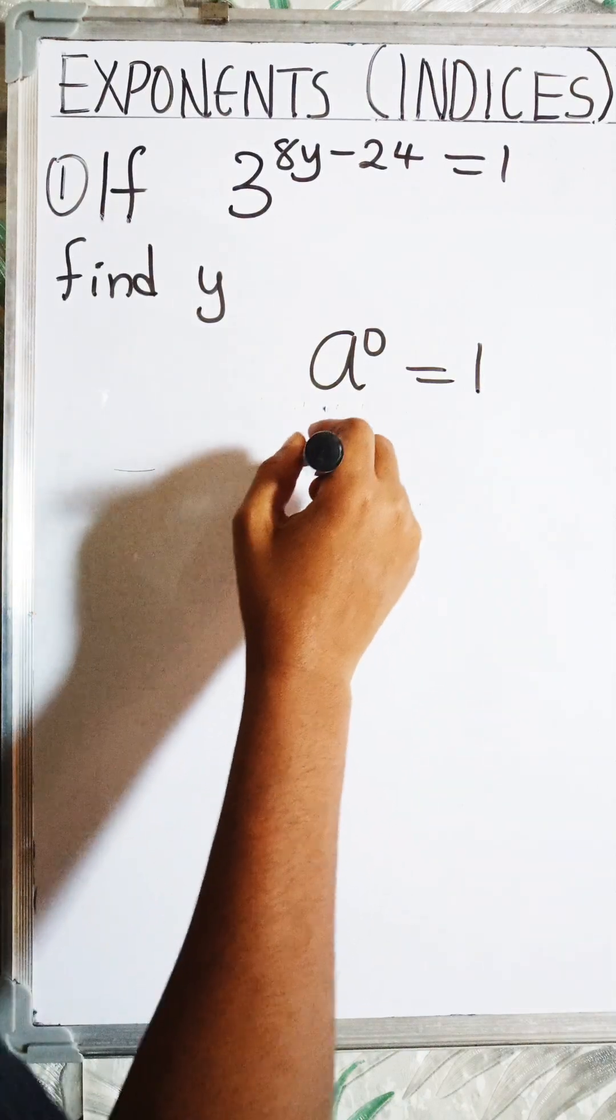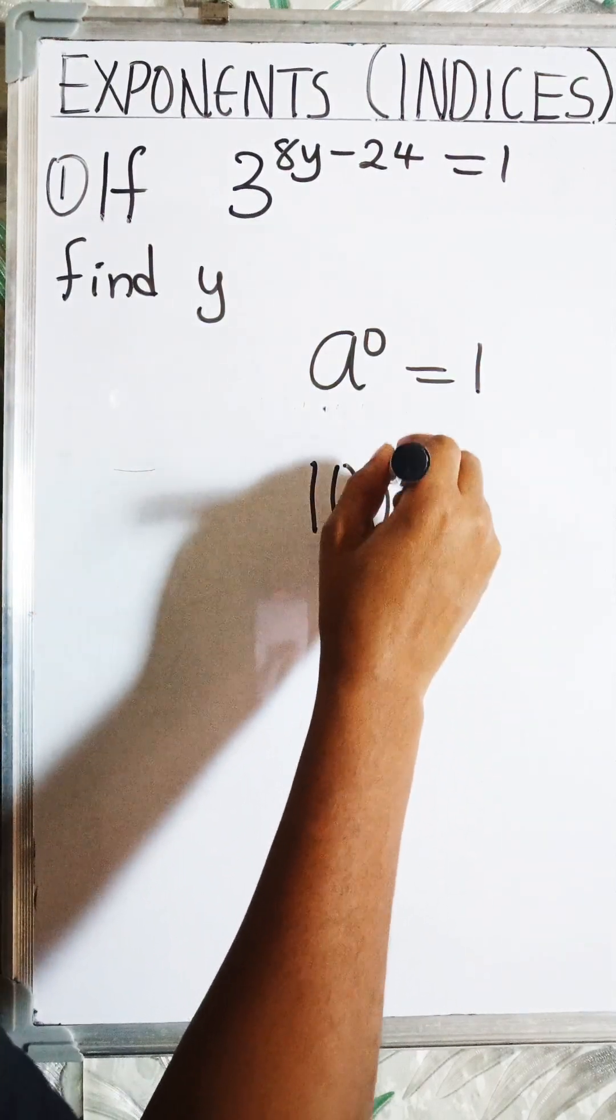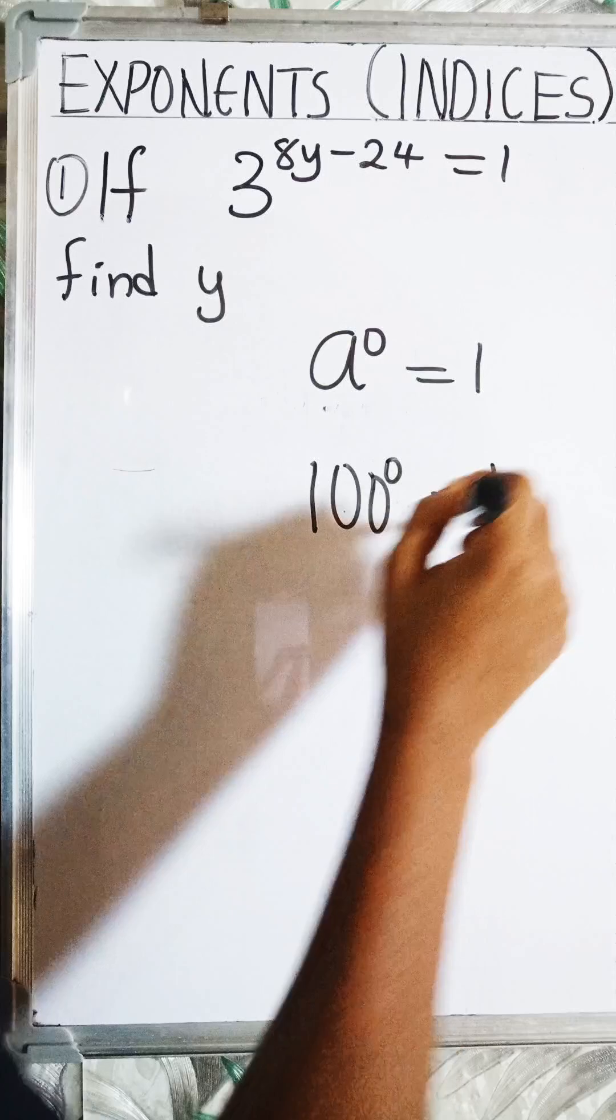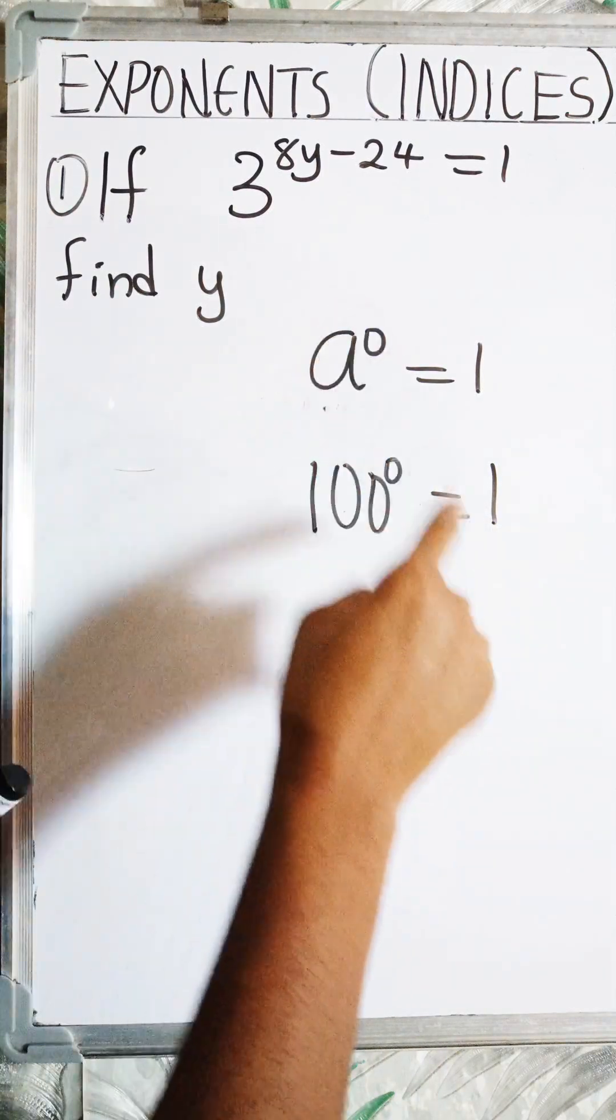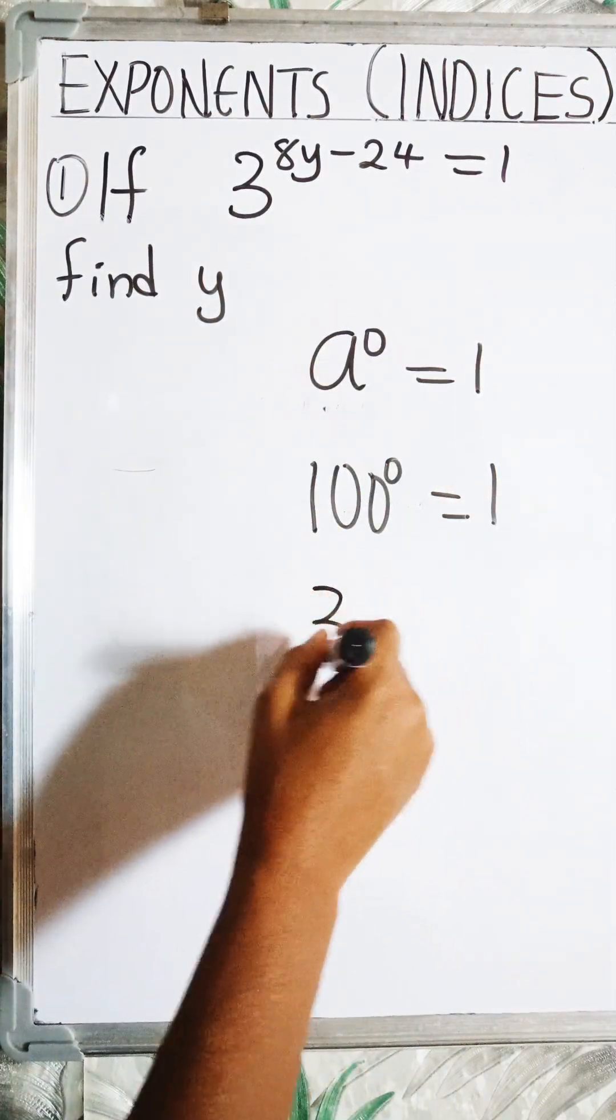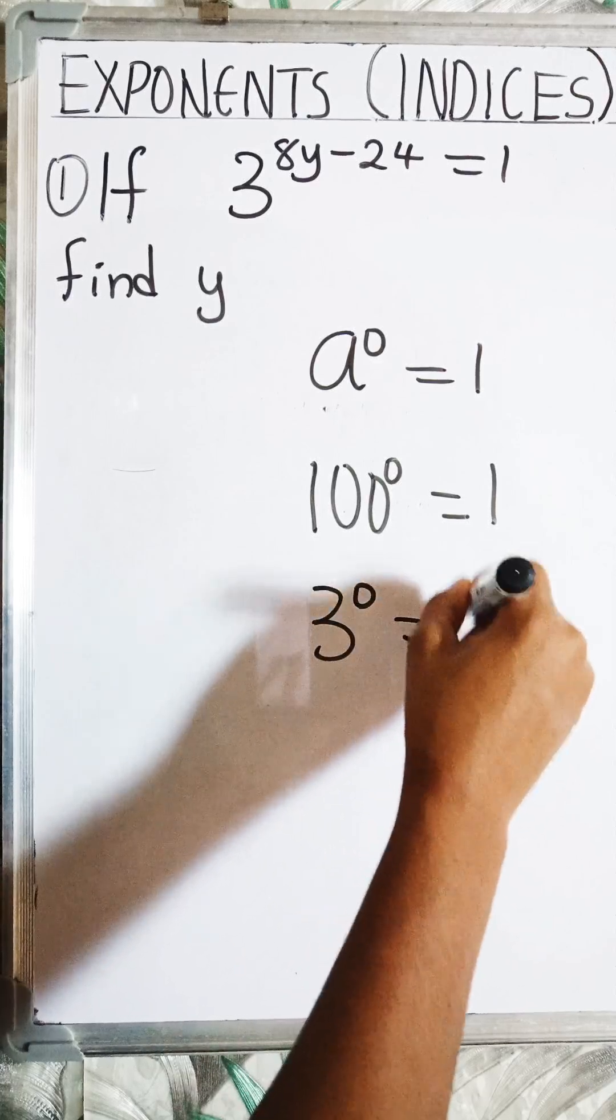Meaning that if I have 100 raised to the power 0, my answer is 1. For any number raised to the power 0, the answer is 1. So if I have 3 raised to the power 0, my answer will be 1.